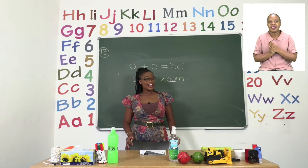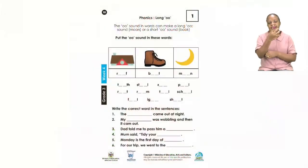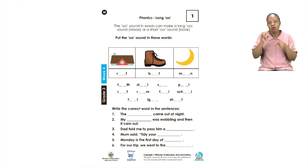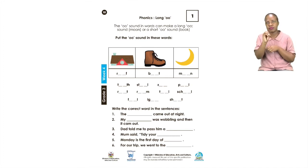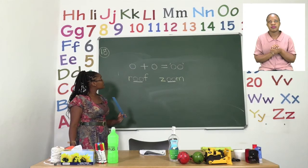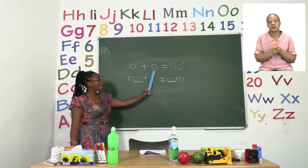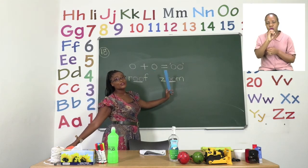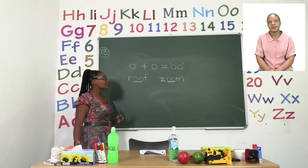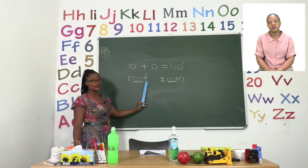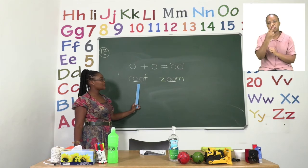Our next activity, boys and girls — please turn to page 18. On page 18 we are going to be talking about the long OO sound. The OO sound is used to make words, and I'm going to show you what it looks like. On the board, when we have O and O together, they make OO. So words like roof and food are created because of the OO sound.